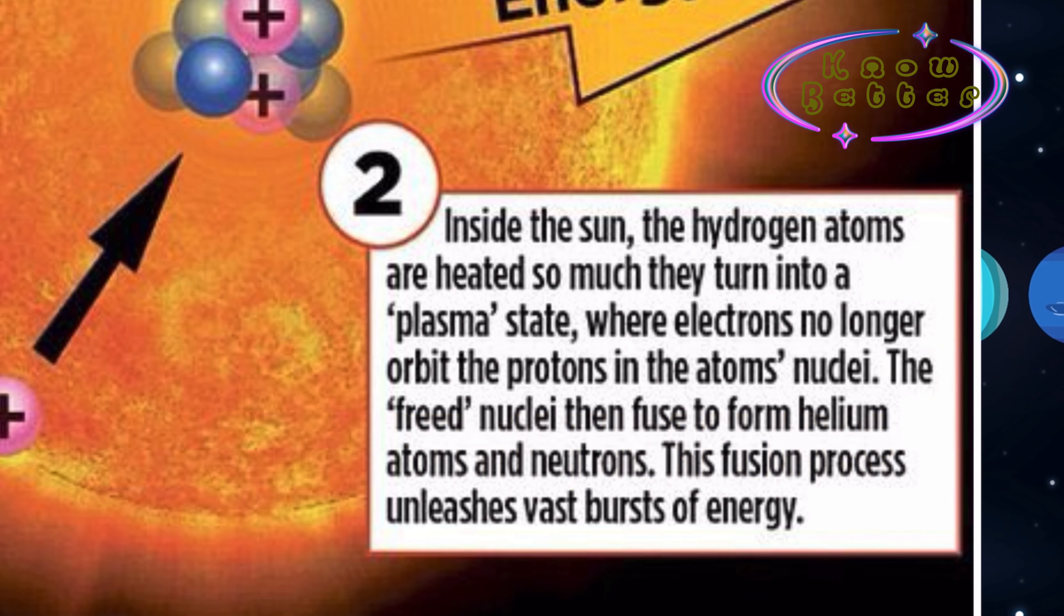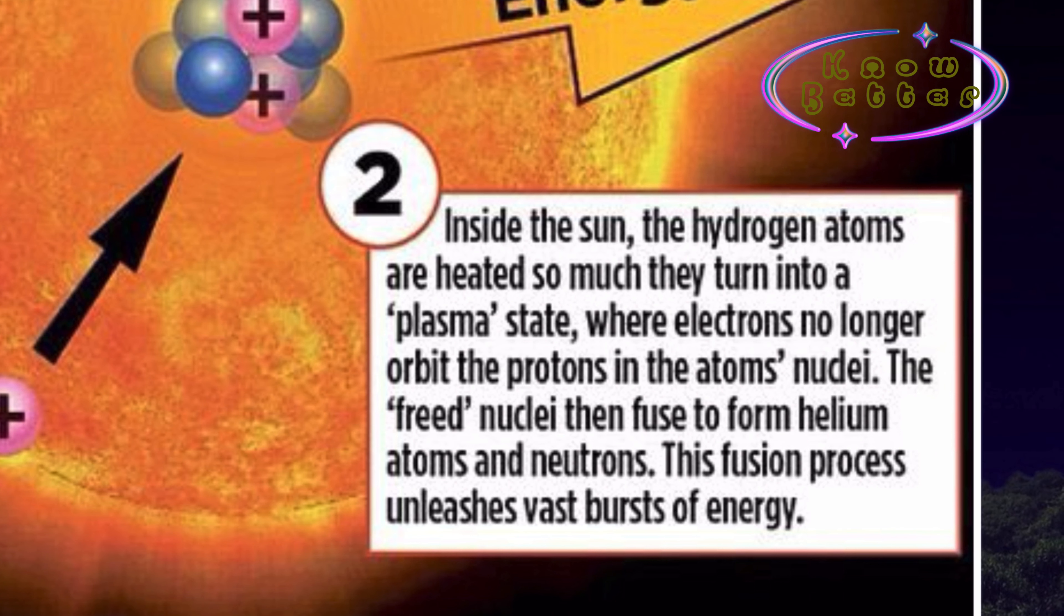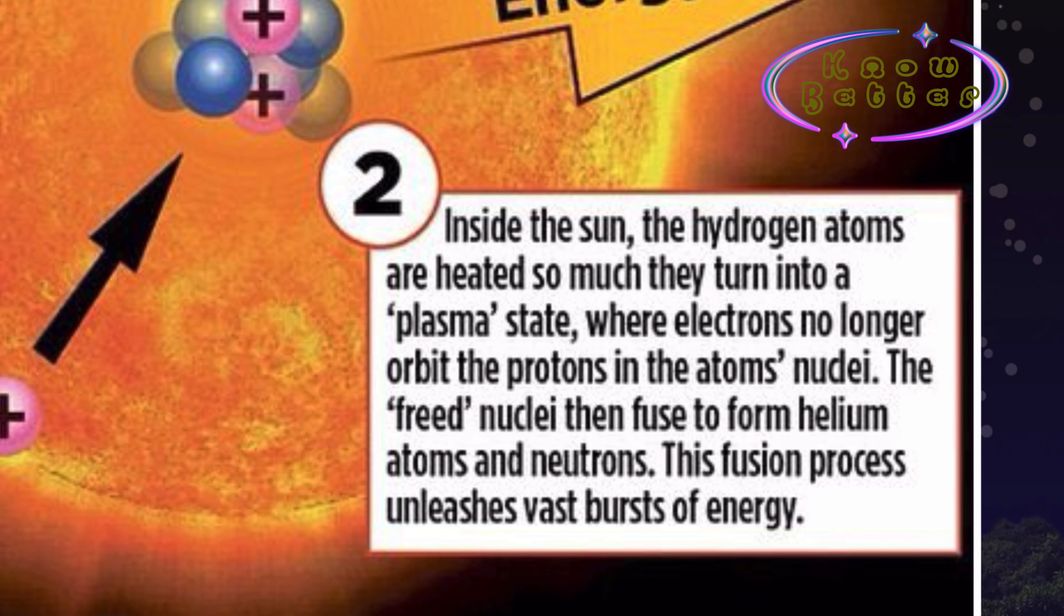The surface temperature of the Sun is about 6,000 degrees Celsius, and the temperature at the center of the Sun is about 15 million degrees Celsius. It is extremely hot because of the nuclear reaction happening inside the Sun.